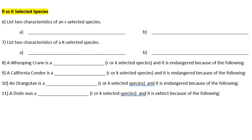Number six: list two characteristics of an r-selected species. Short lifespan and many offspring. Other characteristics include short time to maturity, small offspring, no parental care, and fast population growth rate. The example species for r-selected is the mosquito.